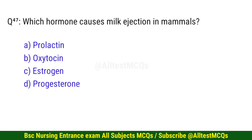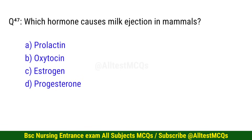Question number 47. Which hormone causes milk ejection in mammals? The right option is B: Oxytocin.